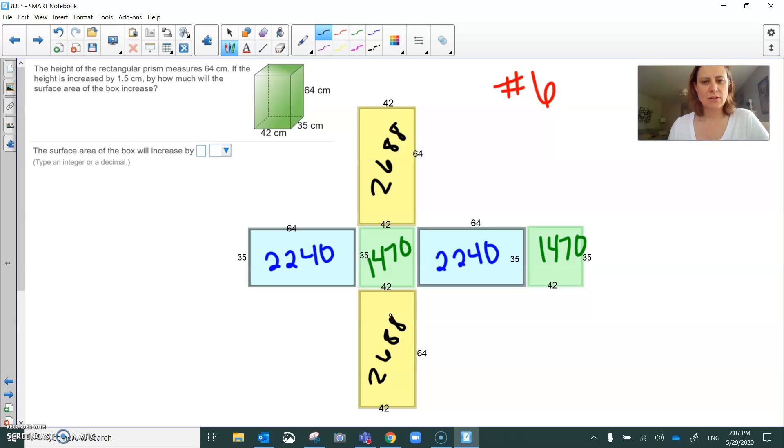Okay, so if I'm not wrong, the surface area of this net or that rectangular prism is 12,796 centimeters squared.